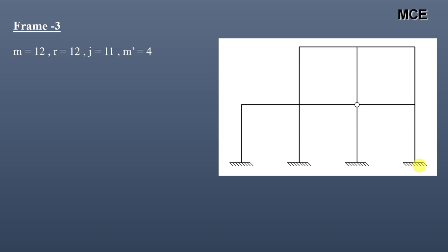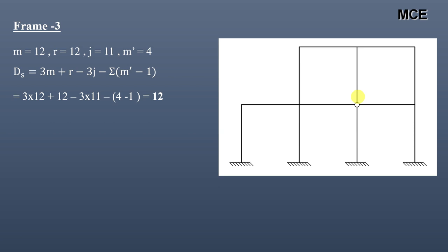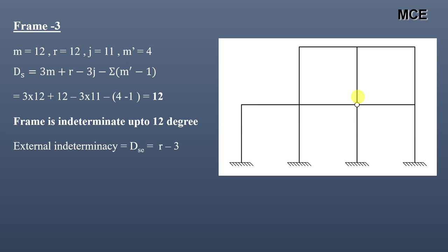For Frame 3, we can see it has 12 members, 12 reactions, 11 joints, and 1 internal hinge. The number of members meeting at this internal hinge is 4, so m′ = 4. The value of ds = 12, so this frame is indeterminate to 12 degrees. External indeterminacy = 12 − 3 = 9. Internal indeterminacy = 12 − 9 = 3.